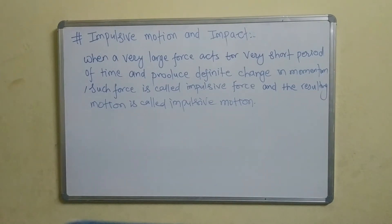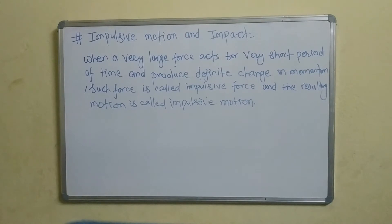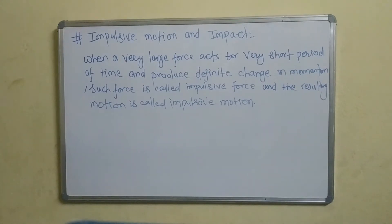Impulsive Motion means that in a very short period of time, the force must cause a definite change in momentum. This is the initial travel of a barrier object — momentum change in a very short period of time, such that the force must cause a definite change in momentum.